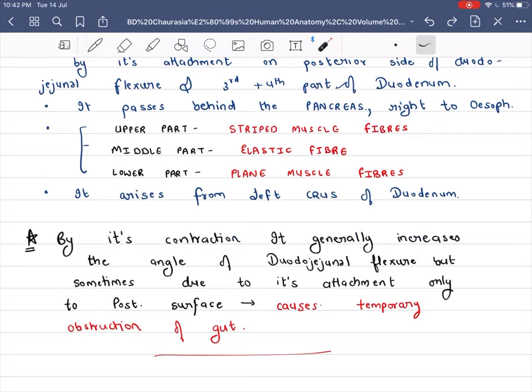Generally its contraction, when it is attached to both third and fourth part plus duodenojejunal flexure posterior part, this contraction increases the angle of duodenojejunal flexure.